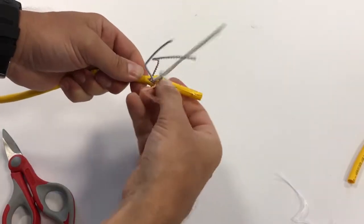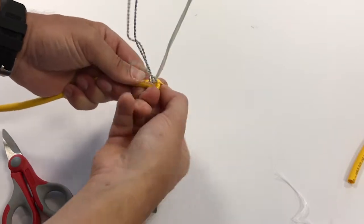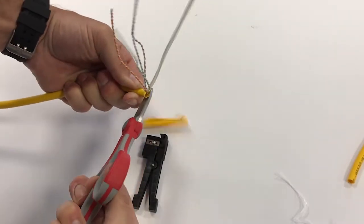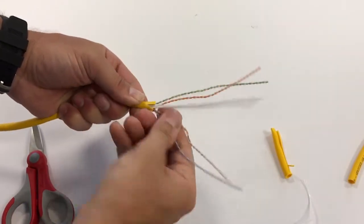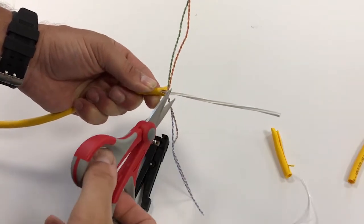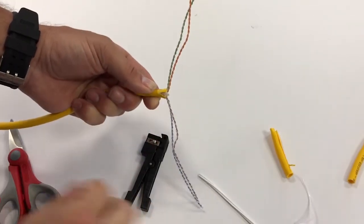We'll then use our utility scissors to cut back the jacket. We now have our four pairs and our center spline. We'll then use the scissors to remove the center spline.